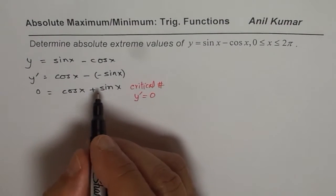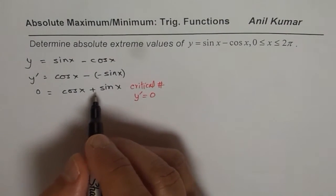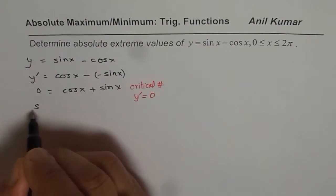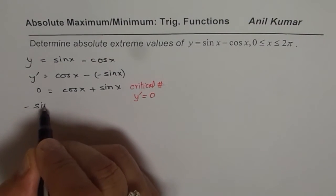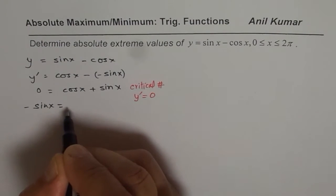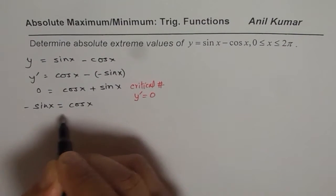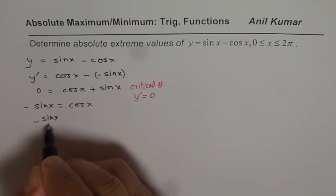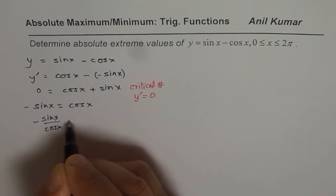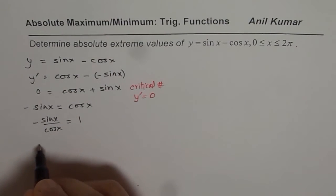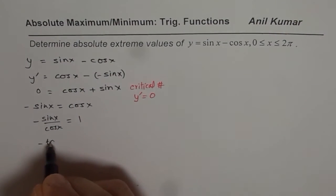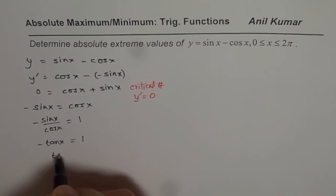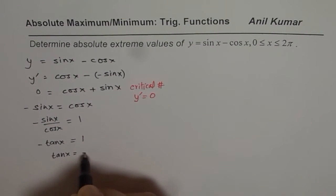We could write this as: take sin x to one side. So what I am saying is minus sin x equals cos x. Dividing by cos x, we get minus sin x over cos x equals 1, or minus tan x equals 1.